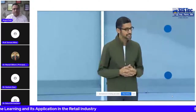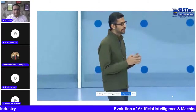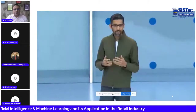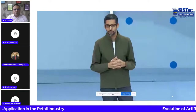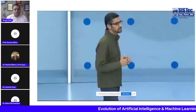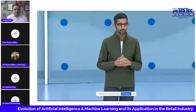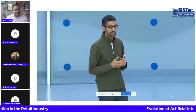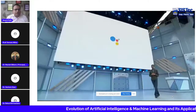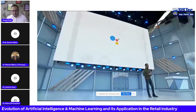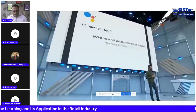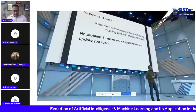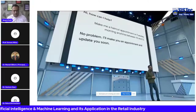Sundar Pichai: 'Our vision for the Assistant is to help you get things done. A big part of that is making phone calls — you may want to get an oil change scheduled, call a plumber, or schedule a haircut appointment. Even in the US, 60% of small businesses don't have an online booking system set up. AI can help with this. Let's say you want Google to make your haircut appointment on Tuesday between 10 and noon. The Google Assistant makes the call seamlessly in the background for you. You're going to hear the Google Assistant calling a real salon to schedule the appointment.'